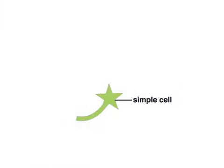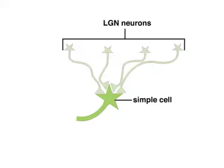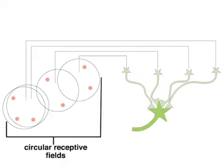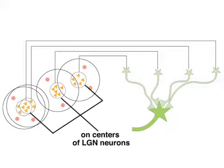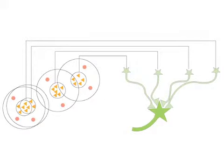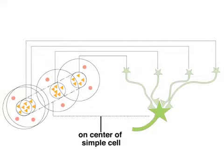Hubel and Wiesel propose that the receptive field of a simple cell can arise from the convergent input of a series of LGN neurons. The circular receptive fields of the LGN neurons, represented by the concentric circles, combine to form the receptive field of the simple cell. The on-centers of LGN neurons, represented by smaller circles filled with triangles, combine to form the on-center of the simple cell, as indicated by the rectangular dashes.